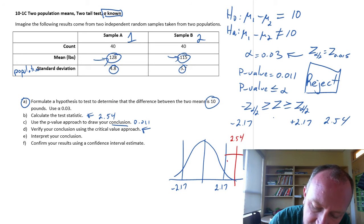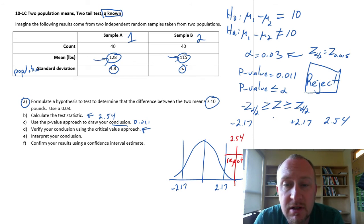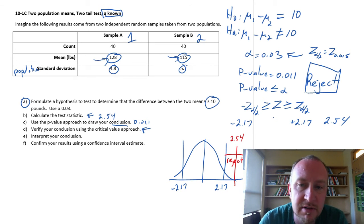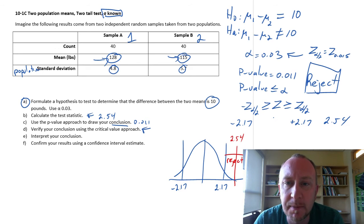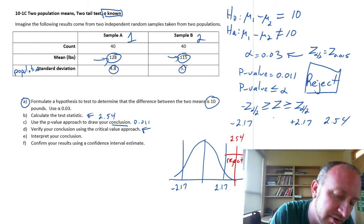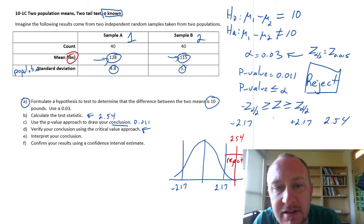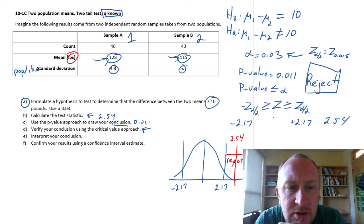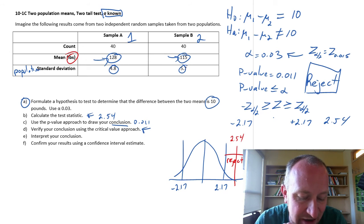So that's good. Everything works out. We find in both cases, p-value approach, critical value approach, we definitely reject that null hypothesis. We do have evidence to show that the difference in the two means is something other than 10 pounds, I guess is our unit of measurement in this case. That's good. So let's get into part F now.